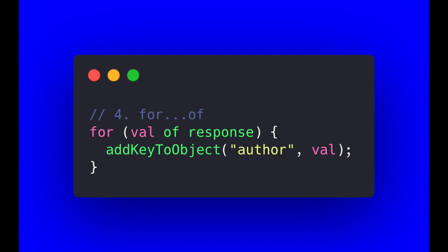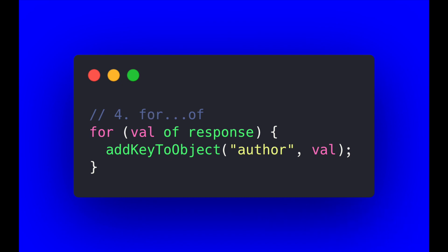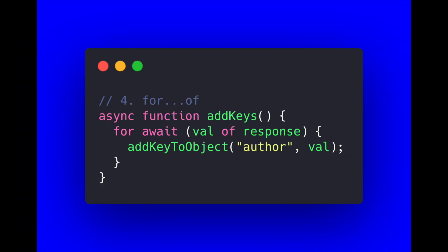The fourth type is a for...of loop. You can see we have 'for' and then inside our brackets 'val of response' — val being short for value, though of course you can call it whatever you choose. It takes the values from the response collection and we execute the addKeyToObject function, passing that entire object in. A useful thing about for...of loops is that you can use them to handle asynchronous tasks as well, so if you ever need to handle asynchronous data in a loop, for...of is a really useful one to look at.